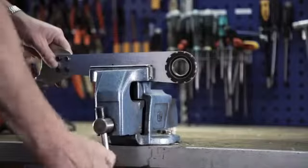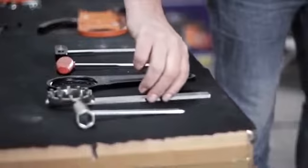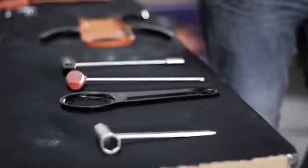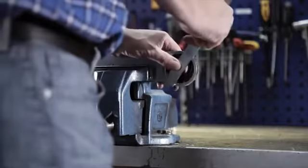Place the bar in a vise. This will make it easier to remove the bearing holder. Use the special tool to unscrew the bearing holder from the bar.